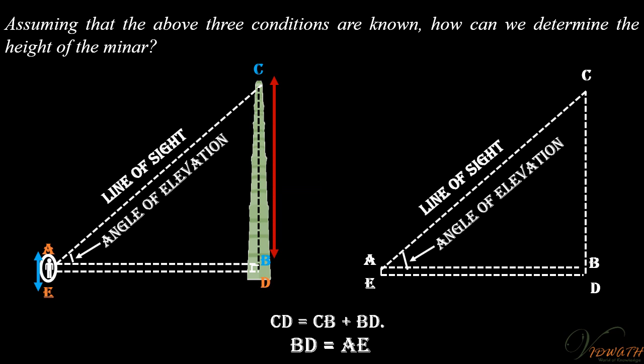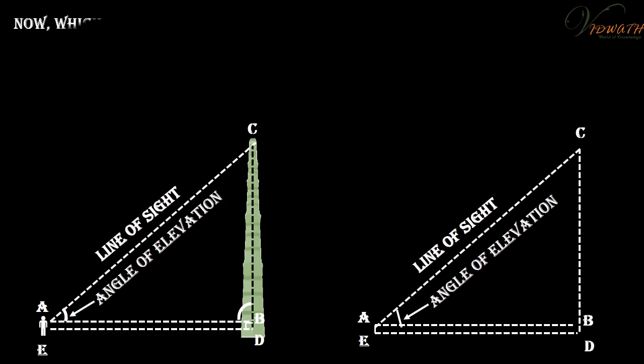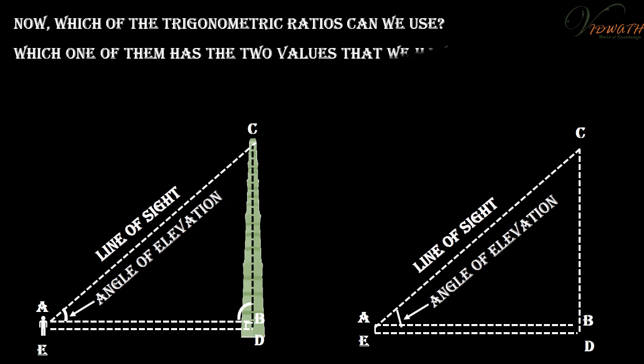To find BC, we will use trigonometric ratios of angle BAC or angle A in triangle ABC. The side BC is the opposite side in relation to the known angle A. Now, which of the trigonometric ratios can we use? Which one of them has the two values that we have and the one we need to determine?